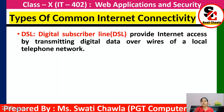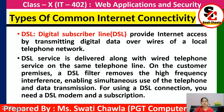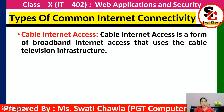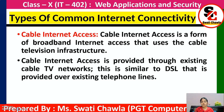Next is DSL — Digital Subscriber Line. It provides internet access by transmitting digital data over wires of the local telephone network. Its main advantage is its speed — it is quite fast. Next is cable internet access, which is a form of broadband internet access that uses the cable television infrastructure. Internet is provided through the existing cable TV network, similar to how DSL is provided over existing telephone lines.